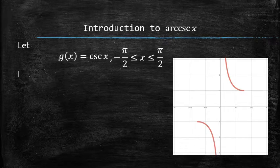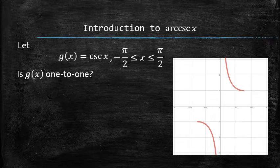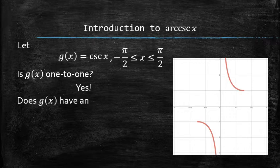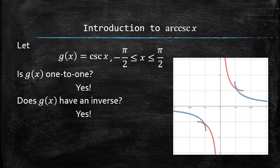Is this function one-to-one? The answer is yes, because it passes the horizontal line test. Does this function have an inverse? The answer is also yes, because all one-to-one functions have inverse functions, and here's what it looks like.